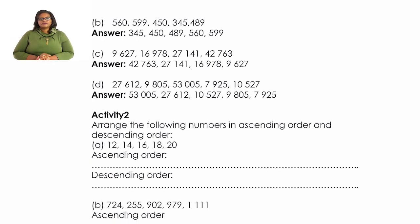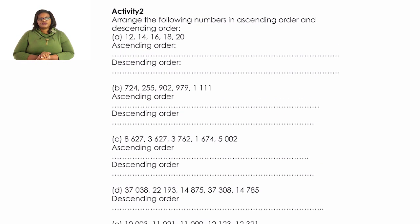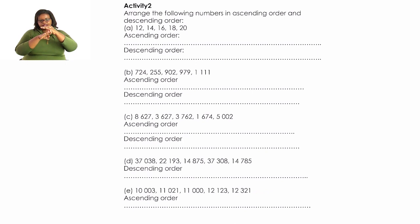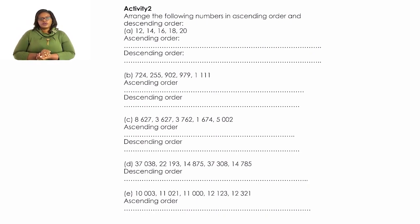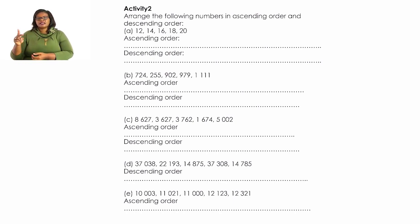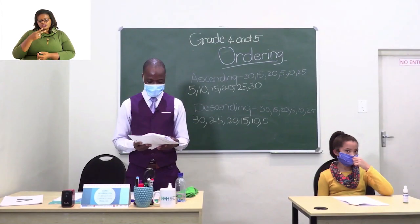We are having Activity 2. We are going to do number 1 together, then you do the rest on your own. On number 1 we are supposed to put the numbers in ascending order — starting from the smallest to the biggest. The smallest number is 12, followed by 14, then 16, 18, 20. When you are done with Activity 2, we have the memorandum on page 15 to help you check whether your answers are correct or wrong.